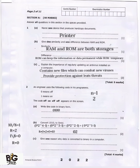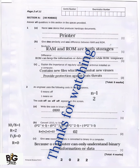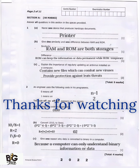Question 2C asks: give one reason why data is converted to binary in a computer. The answer is that a computer can only understand binary information and can only process it. Thanks for watching, see you next time.